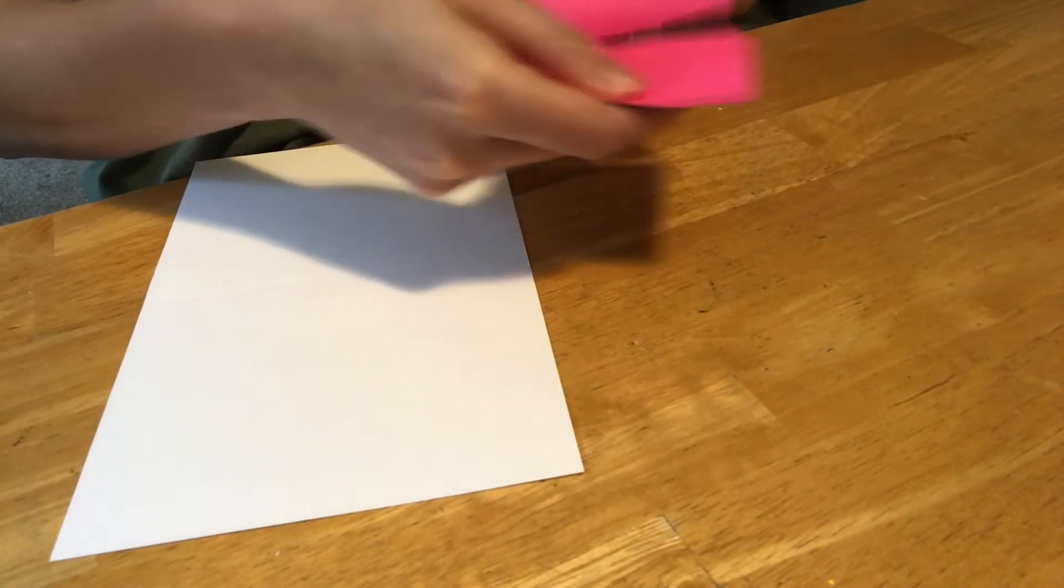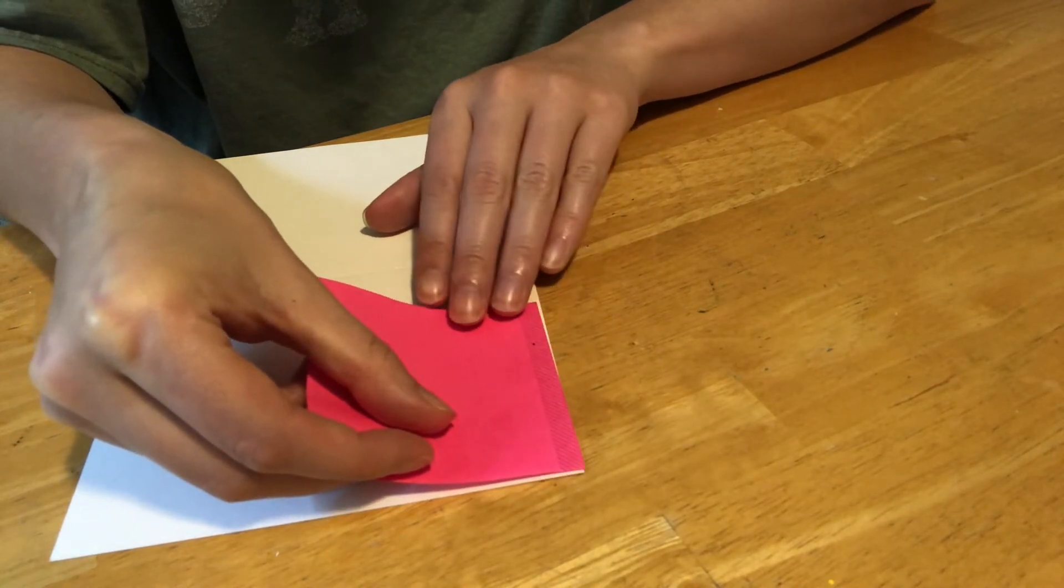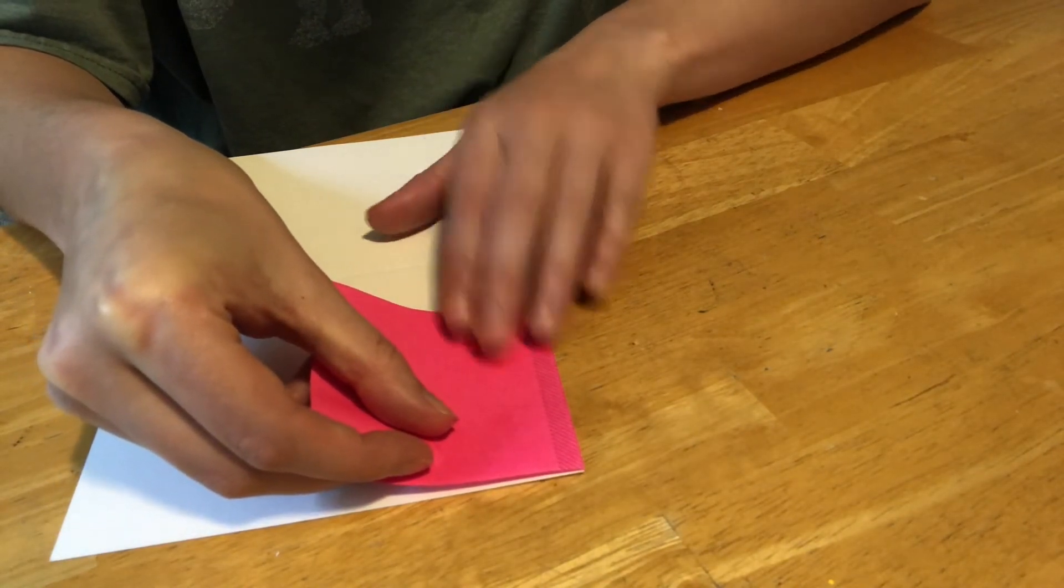First, put the post-it note onto the piece of cardstock to help you cut out a perfect square. It's important that your shape is exactly a square, which is why we're using the post-it note.